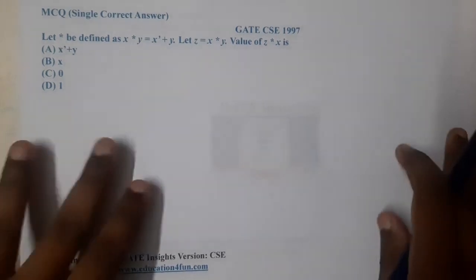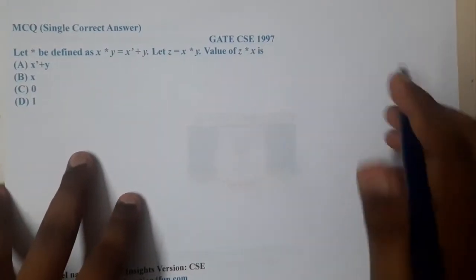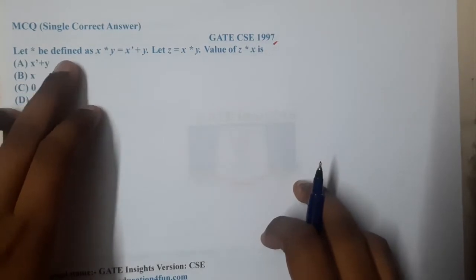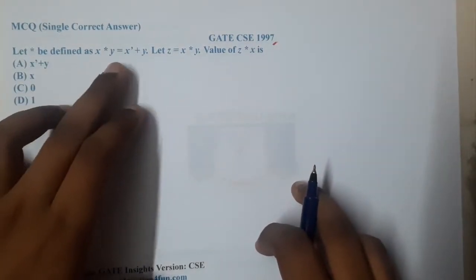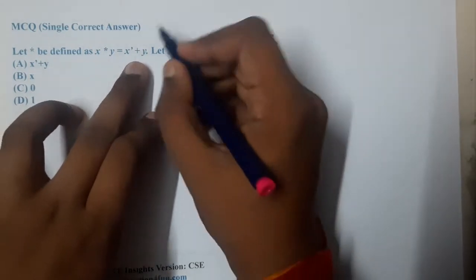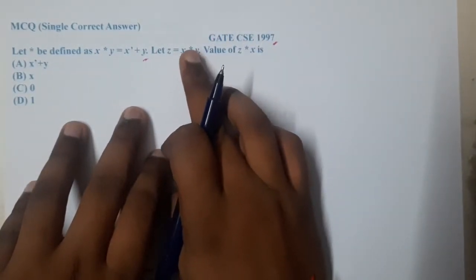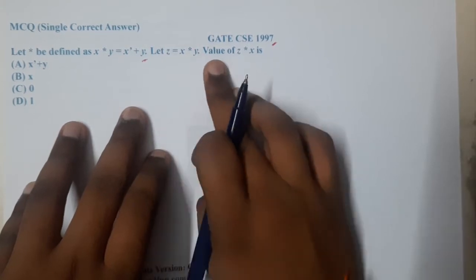Hello guys, we are back with our next lecture. This question belongs to GATE CSE 1997. The question is: let star be defined as x into y equals x bar plus y. Let z equals x into y. Find the value of z into x.